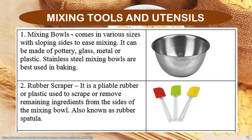Mixing Tools and Utensils: First are mixing bowls, which come in various sizes with sloping sides to ease mixing. They can be made of pottery, glass, metal, or plastic. Stainless steel mixing bowls are best used in baking. The rubber scraper is a pliable rubber or plastic tool used to scrape or remove remaining ingredients from the side of the mixing bowl. It is also known as a rubber spatula.